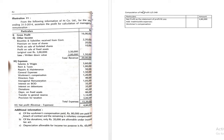Here we have the solution: computation of net profit under Section 349. The main basic part in order to calculate the profit for managerial remuneration starts with the net profit as per the statement of P&L, which is 4 lakh 80 thousand.